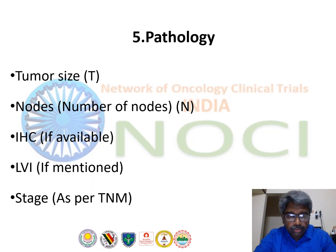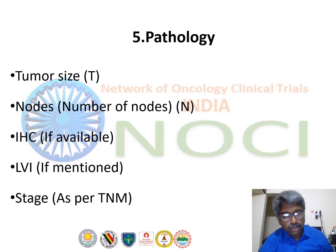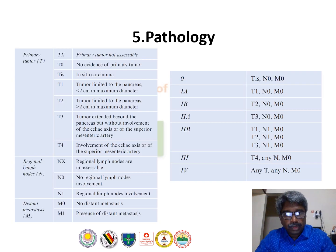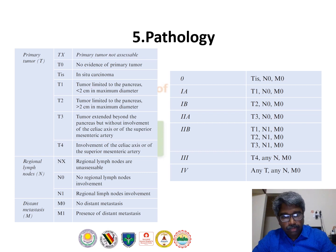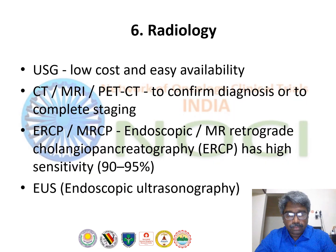For pathology of resected cases, look at tumor size, number of nodes resected, immunohistochemistry if available — used rarely in pancreatic cancer mainly to rule out neuroendocrine differentiation — lymphovascular invasion if mentioned, and stage. This is the TNM staging, which accounts for tumor size, regional lymph node involvement, and presence or absence of metastatic disease. According to the TNM classification, the stage can be determined as stage 1, 2, 3, or 4.